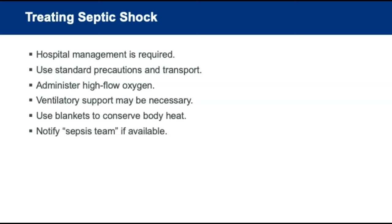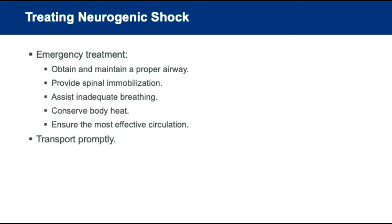Treating septic shock requires hospital management including antibiotics. Use standard precautions due to infection risk and transport promptly. Give high-flow oxygen and possibly support ventilations with a BVM. Preserve body heat and notify a sepsis team if available to meet the patient in the emergency department. For neurogenic shock, obtain and maintain a proper airway, consider C-spine, assist inadequate breathing, conserve body heat, and ensure effective circulation.